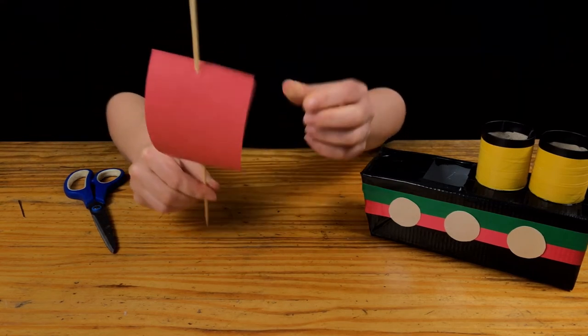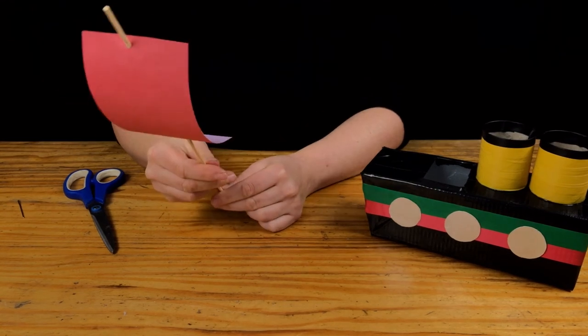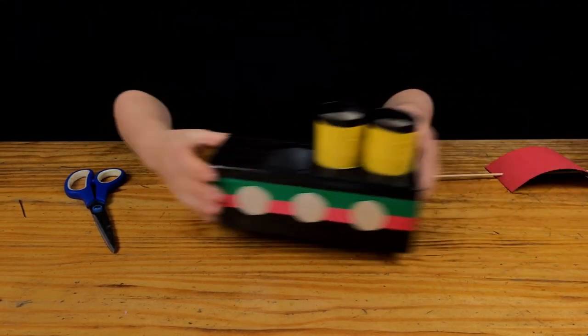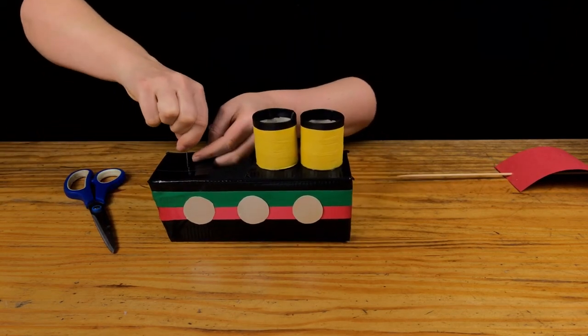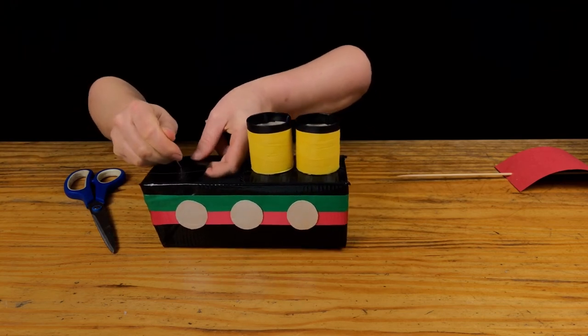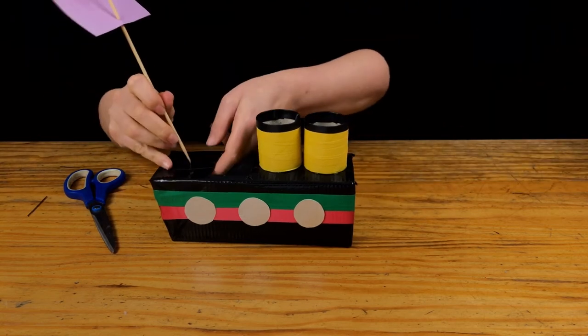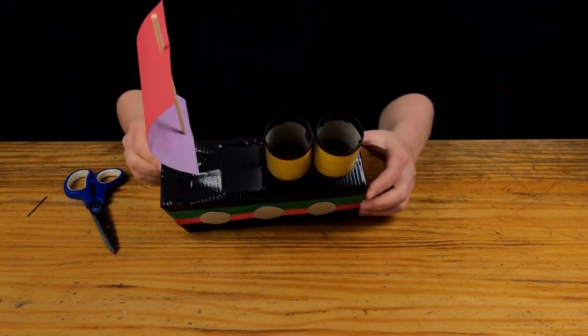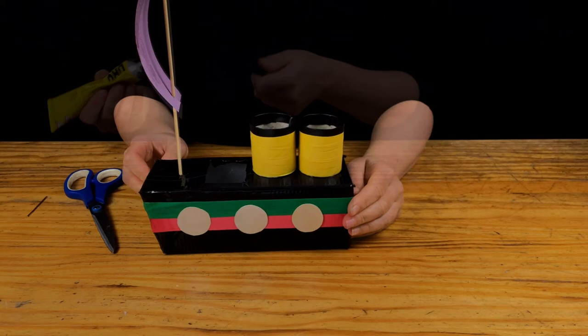And position the sail like so. Use the darning needle to make a hole at the front of the ship. Insert the bamboo skewer to position the sail. Then glue it into place.